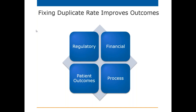Fixing your duplicate rate improves outcomes — not only from a regulatory perspective, such as when you need to provide specific information to a government agency with accurate numerators and denominators, but also financially, ensuring you receive all correct billings. And then again, patient outcomes — how well the patient does with all the clinical data that could be available to their providers.